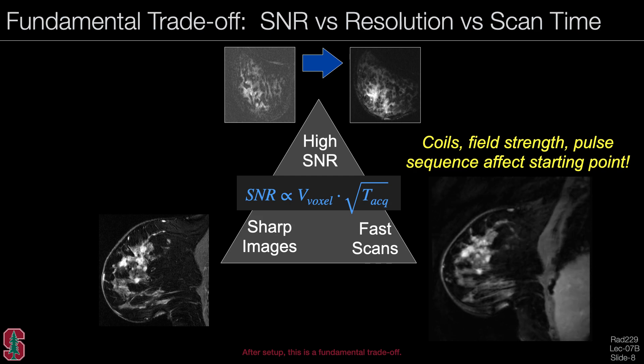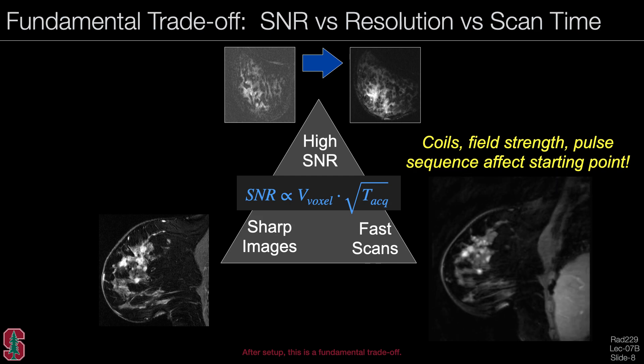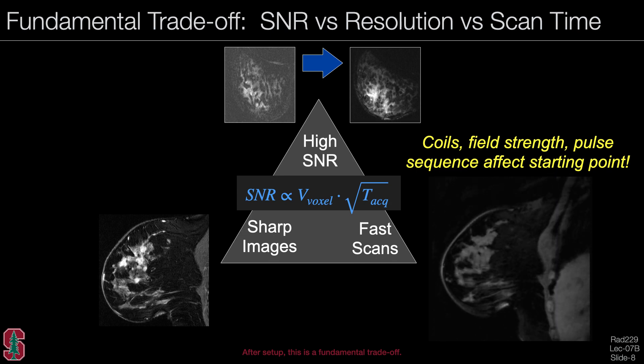Notice that factors like the coils, the field strength, the pulse sequence, and other parameters will affect the starting point of this trade-off. So we want to get these right, and then we manage the trade-off.